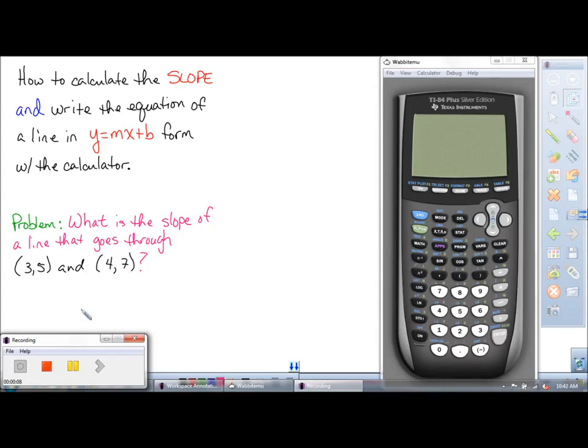What is the slope of a line that goes through 3, 5, and 4, 7? So the first thing you want to do is we need to label our x and y values as L1 and L2.